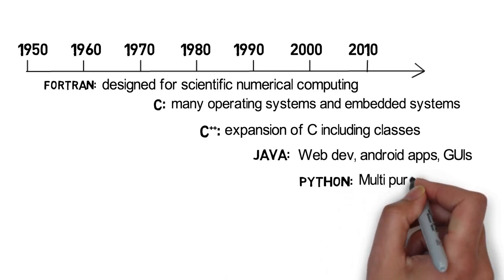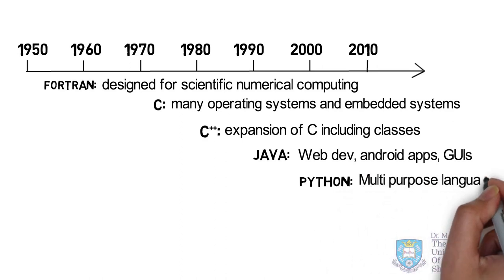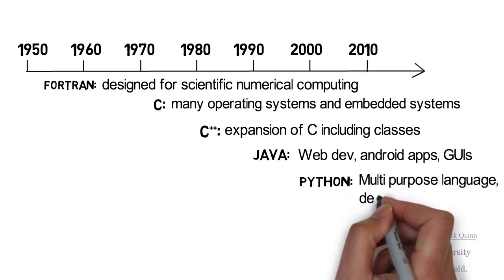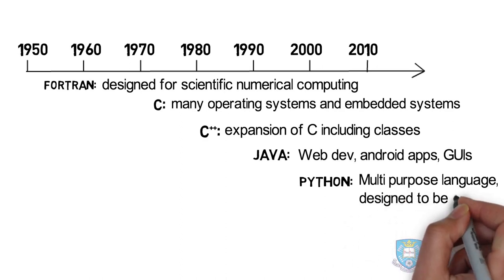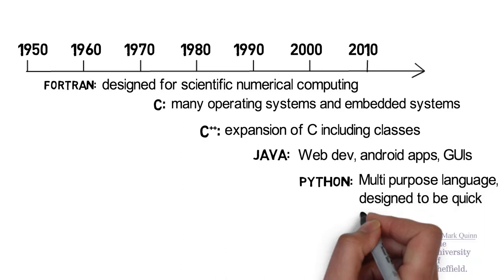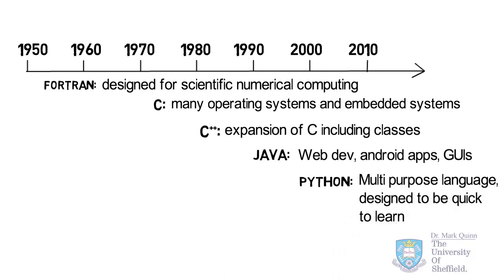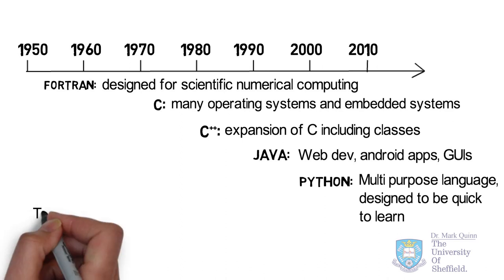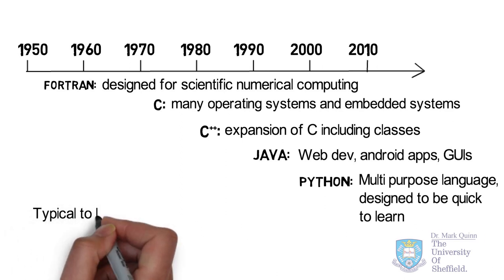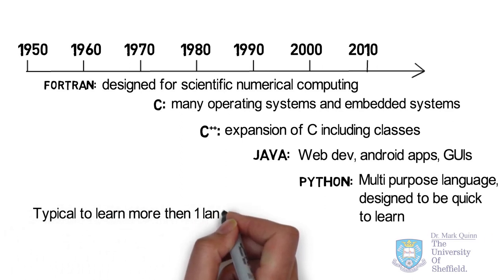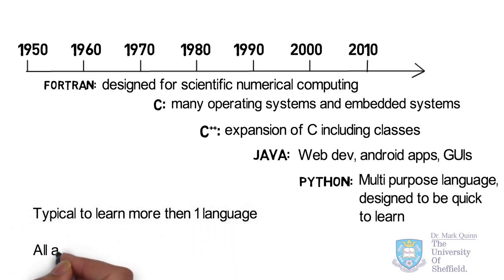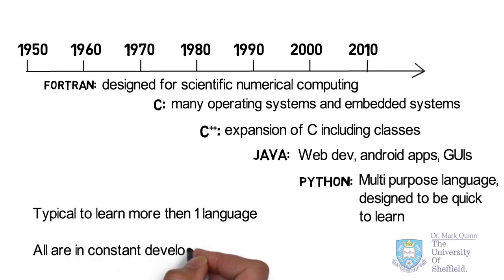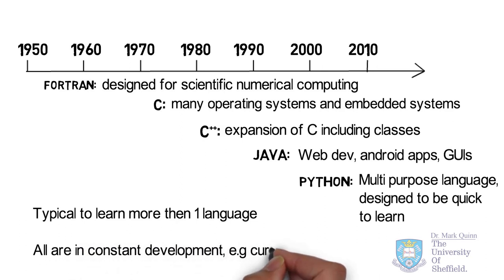The Python programming language was conceived in the late 1980s. Version 1.0 was released in 1994 and the current version is 3.6. Python is designed to be an easy language to use and to learn, and is a multi-purpose language used for designing web applications, desktop applications, and in our case scientific computing.